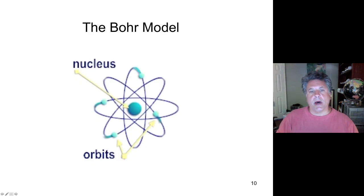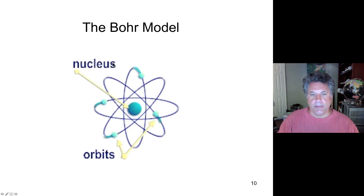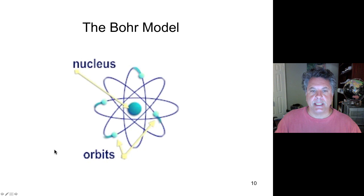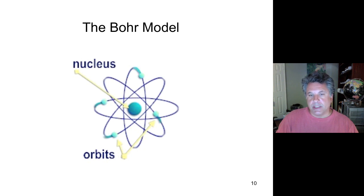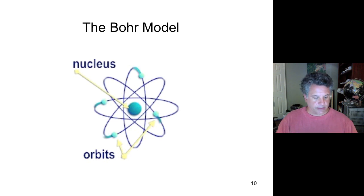Here is the Bohr model with electrons in discrete orbits around the nucleus, much like planets orbiting a star. But the Bohr model is not accurate. Modern physics tells us electrons are found in orbitals with varying shapes — these orbitals describe probability distributions where electrons might be found around the nucleus.